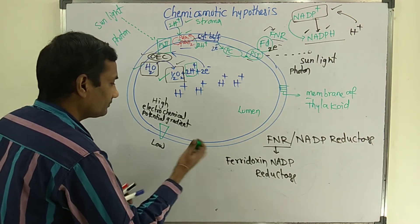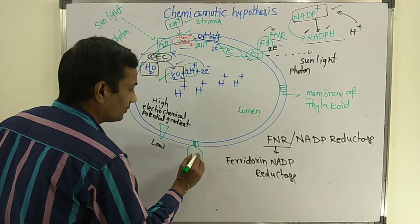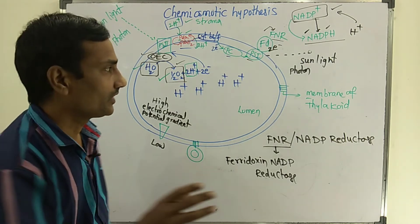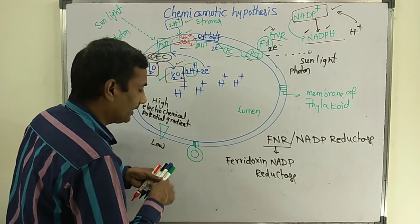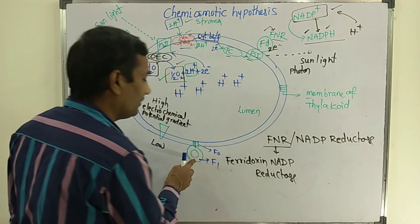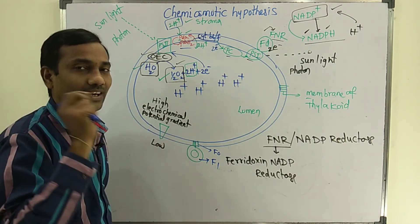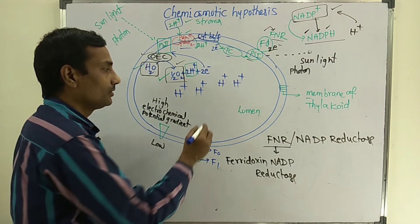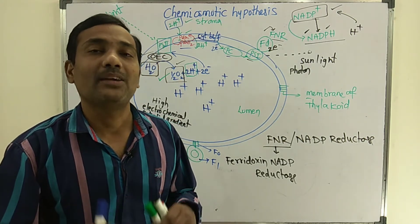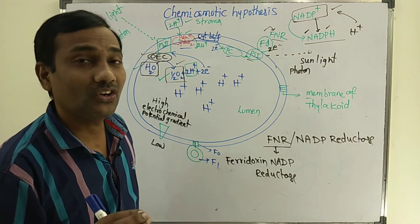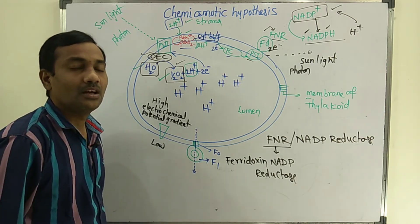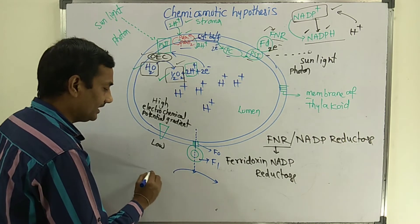F0, F1 particles are also called ATP synthase. The F0 component is embedded in the membrane, and the F1 part is facing the stroma. A high concentration of protons is maintained inside the lumen. These protons pass through the F0, F1 particle, and that helps in the formation of ATP.